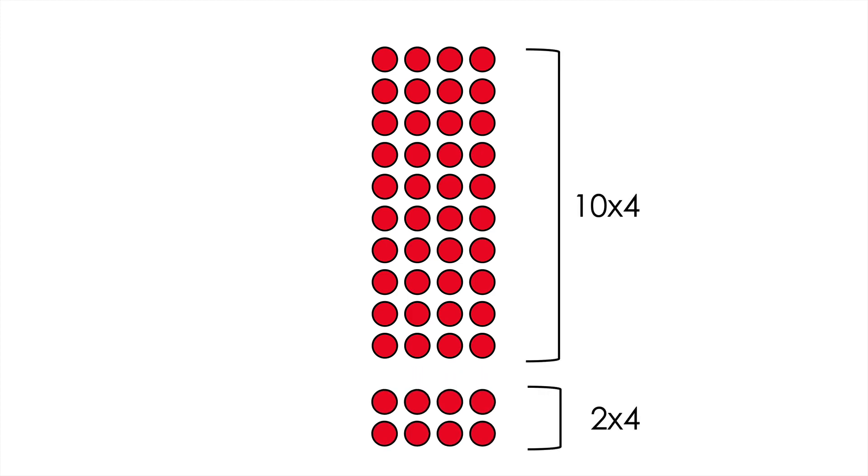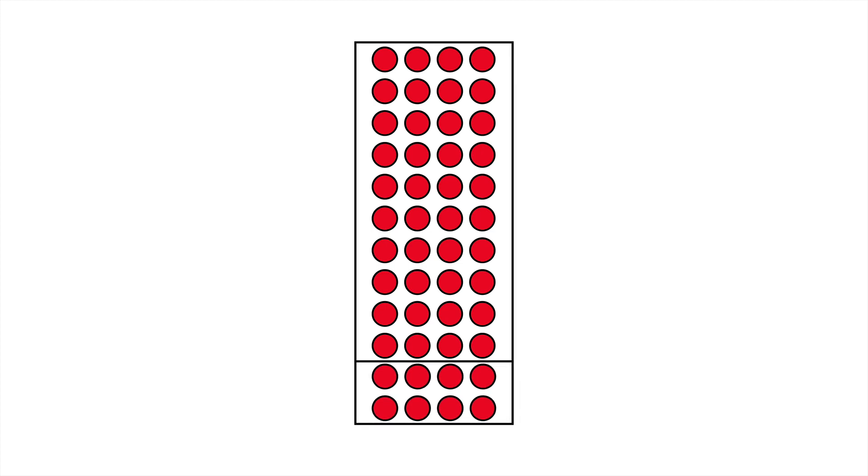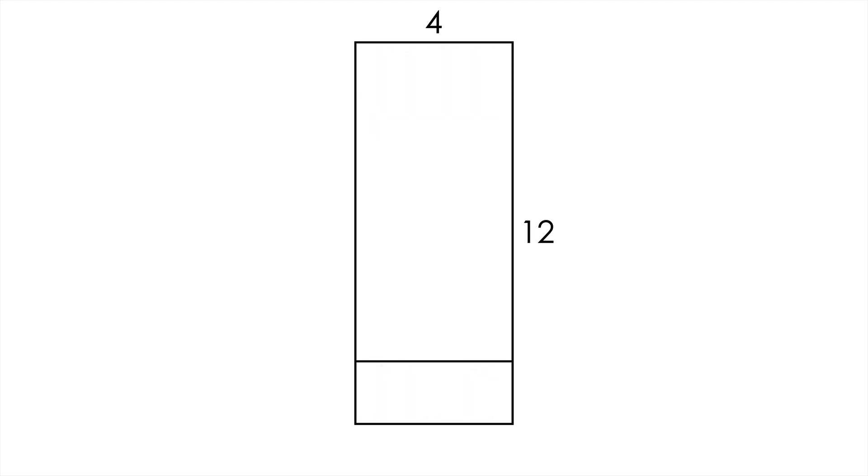This understanding, when we work a lot with arrays, is going to transfer to multi-digit multiplication. For example, this array represents 12×4. We can easily visualize 12×4 as 10×4 plus 2×4. This makes it really simple to solve. Later on, when students are introduced to the area model, this is a really natural progression. They already have this visual in their minds, and it makes the area model a lot easier to understand.